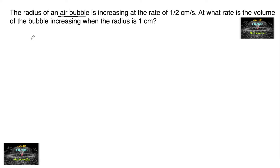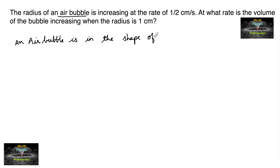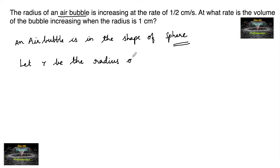A bubble is in the shape of a sphere, so we consider a sphere. Let r be the radius of the air bubble and v be its volume.